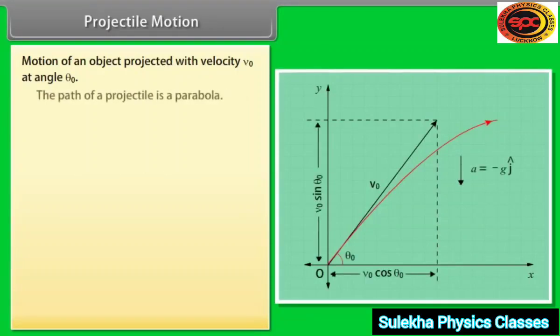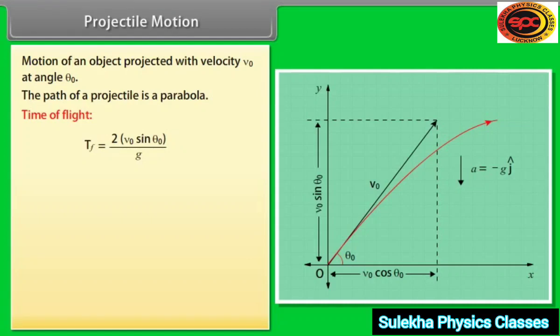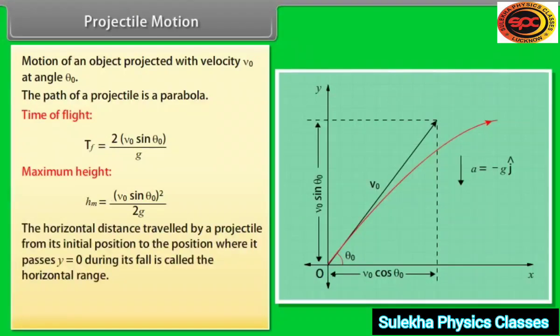Motion of an object projected with velocity v₀ and angle θ₀ is shown in figure. The path of a projectile is a parabola. Time of flight of projectile is tf = 2v₀sinθ₀/g. Maximum height of a projectile is hm = (v₀sinθ₀)²/2g. The horizontal distance traveled by a projectile from its initial position to the position where it passes y = 0 during its fall is called the horizontal range. Horizontal range of projectile is given by v₀²sin2θ₀/g.